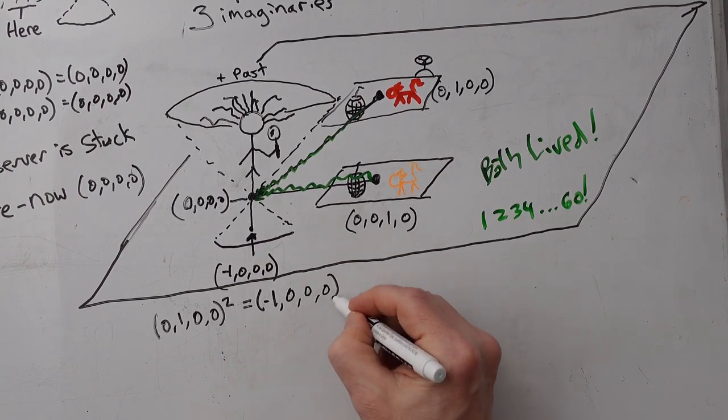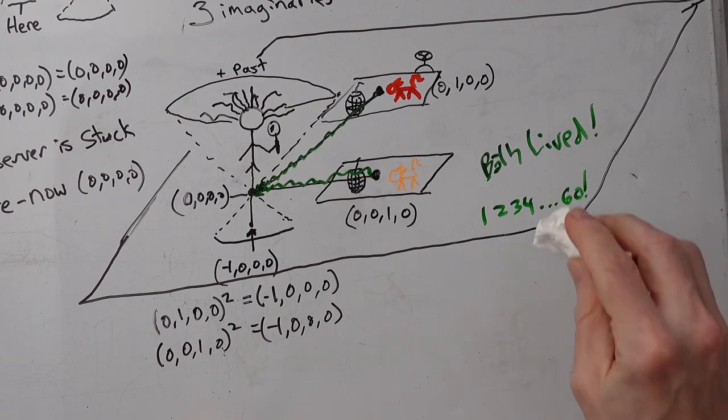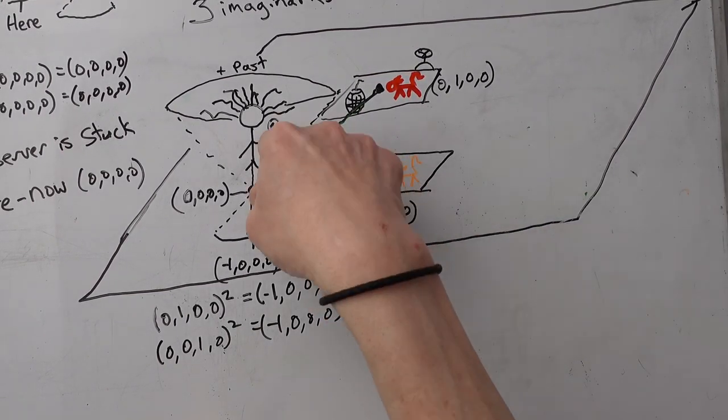So if we square this 0, 1, 0, 0, we get minus 1. Einstein gets it in the future, one unit later. So we're going to repeat the experiment.